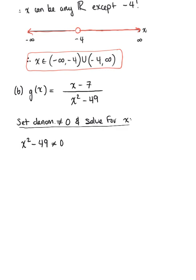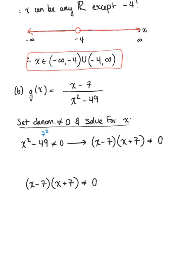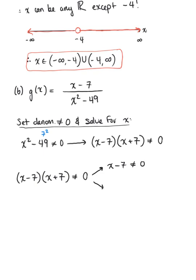Looking at x² − 49, we recognize 49 as a perfect square — this is 7 squared — so we have a difference of squares, and we can factor. This is equivalent to saying (x − 7)(x + 7) cannot be equal to zero. So we need to think about two separate cases: where x − 7 ≠ 0 and where x + 7 ≠ 0.